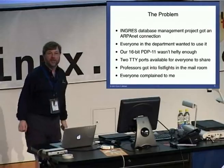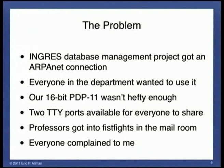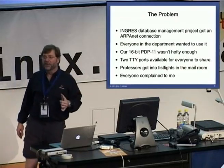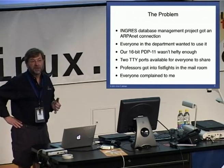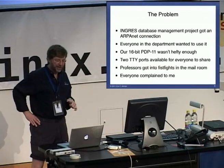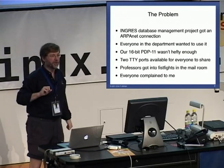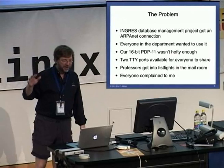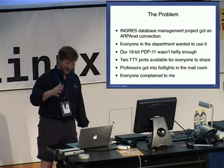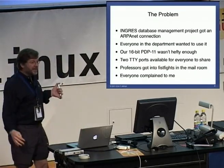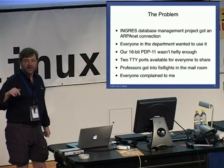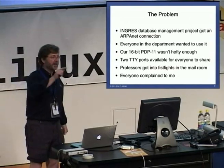The Ingress project — the database management project that I was on and was running the machines — got an ARPANET connection. The ARPANET connection, by the way, had a 56 kilobit backbone. We couldn't afford that — we had a 9,600 baud line to the ARPANET. Everyone in the department decided they really, really needed to use this connection. We had a 16-bit PDP-11, and it was not enough to give everyone in the department an account. So we could free up a grand total of two teletype ports to share. I am exaggerating when I say professors got into fist fights in the mail room — I never actually saw fists. And everyone complained to me because it was obviously my fault that I hadn't fixed this. TTY ports, at the time — just adding more would cost $5,000 for one 9,600 baud TTY port.